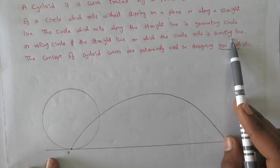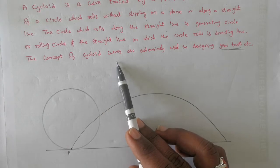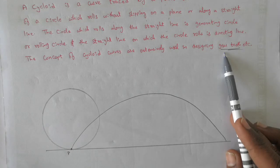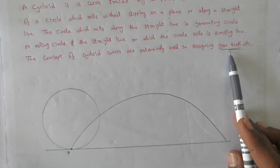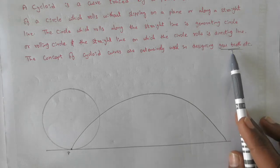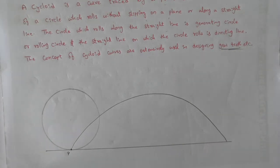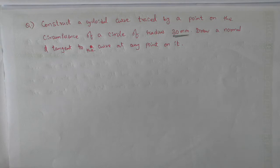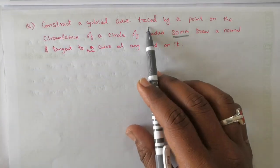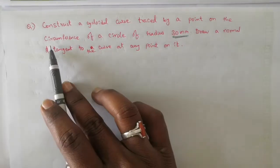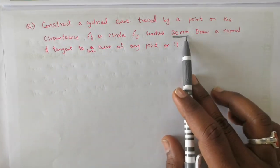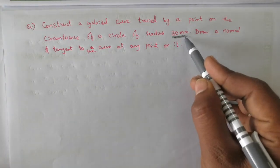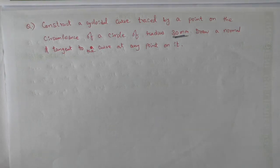The concept of cycloid curves is extremely used in designing gear teeth — for example, in gears used in motor vehicles. Now let's look at the question: construct a cycloidal curve traced by a point on the circumference of a circle of radius 30 mm, and draw a normal and tangent to the curve at any point on it.